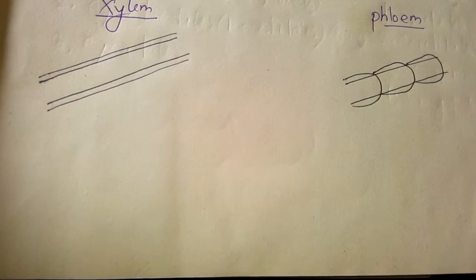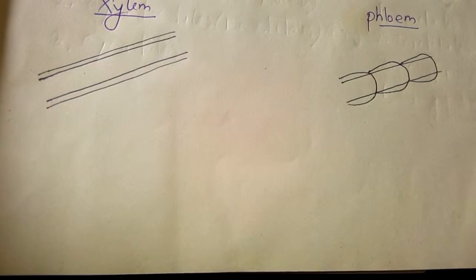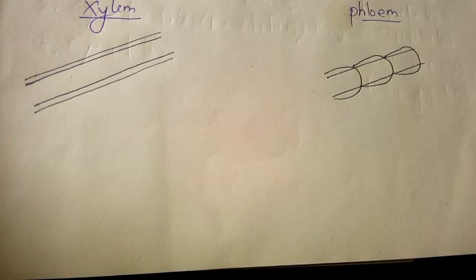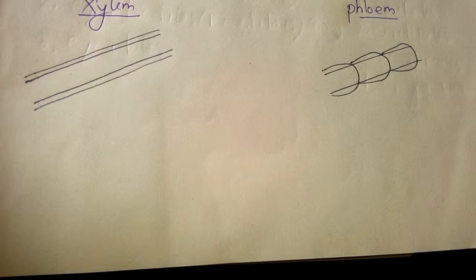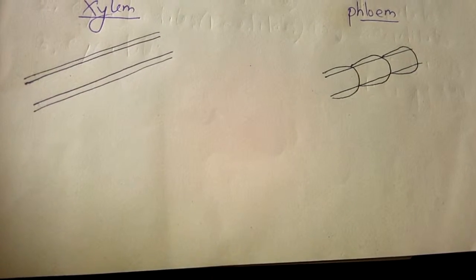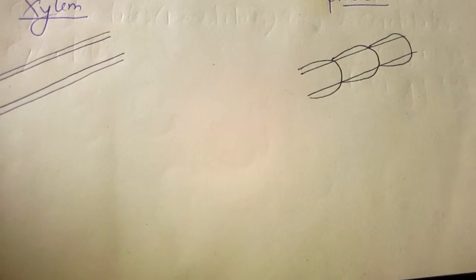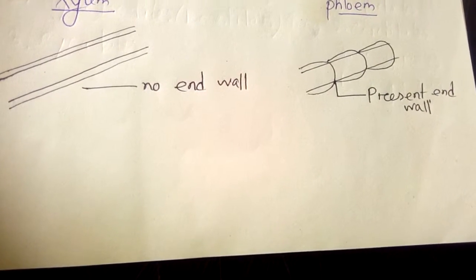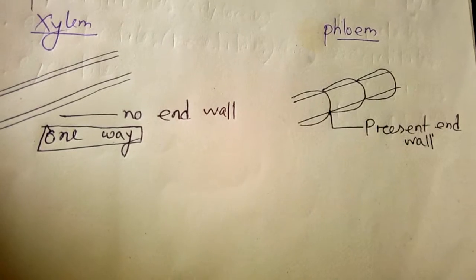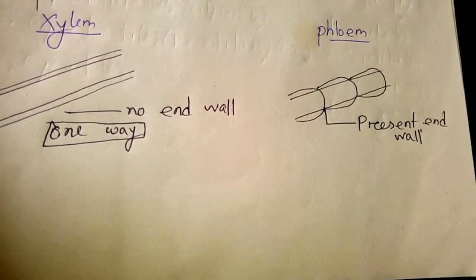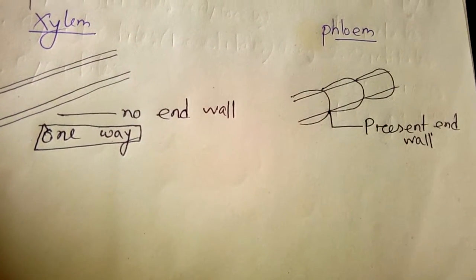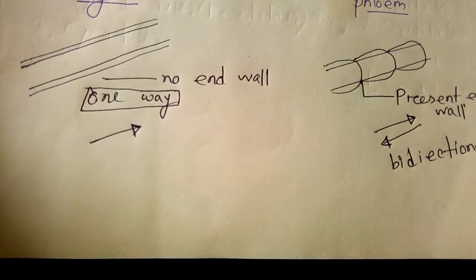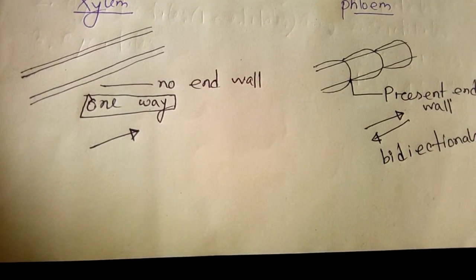Xylem has no end wall between the cells, but in phloem there are end walls between cells with perforations. Movement in xylem is just one way, but movement in phloem is bidirectional. Xylem is made up of dead cells, but phloem is made up of living cells.